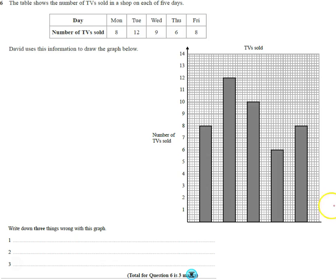Question number six is talking about the number of TVs sold in a shop. So on Monday there was eight sold, Tuesday twelve, and so on and so on.